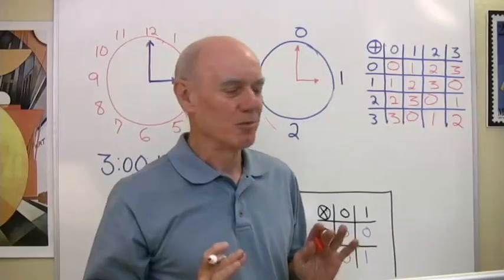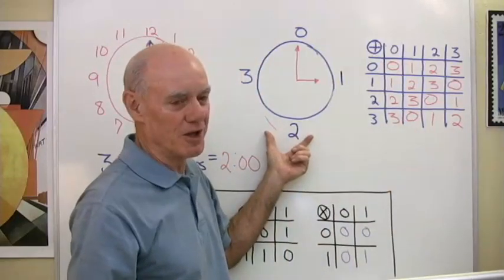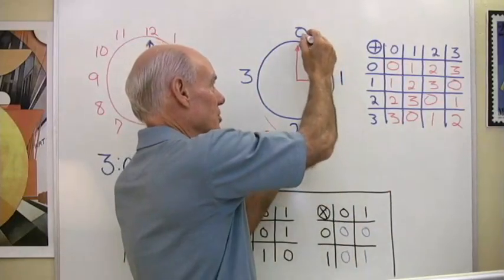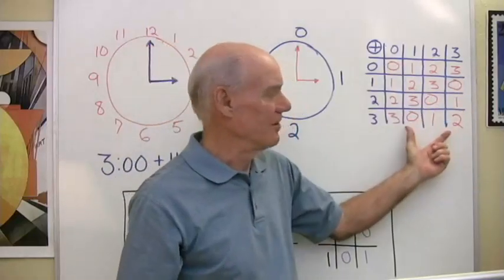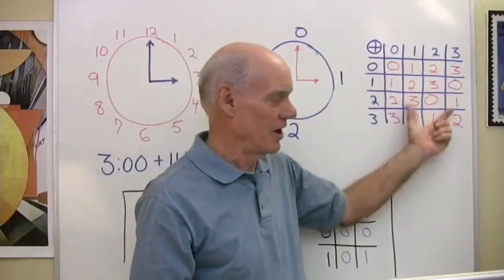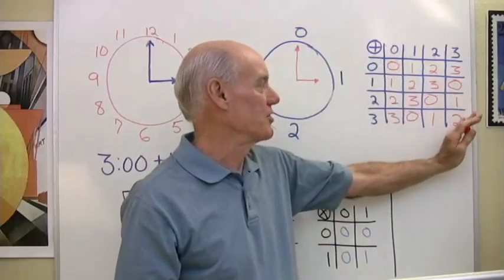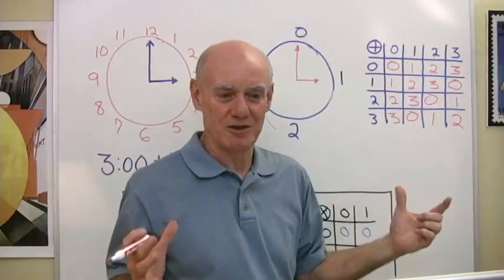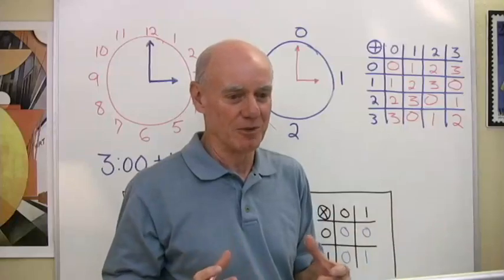So that's my circle plus addition table right here for this clock arithmetic that just has the four numbers 0, 1, 2, 3. Now what happens when I define addition this way with clock arithmetic, I end up with a nice closed set under this operation right here and I can do all the things with this that I can do with my big algebraic structure with all the real numbers in regular addition and multiplication.